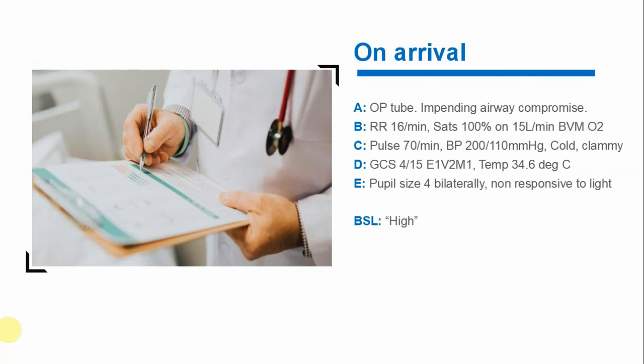On arrival, this was a very critically unwell patient with a low GCS. There was an oropharyngeal tube in place; she was found to be hypertensive with a normal heart rate, cold and clammy, with a high blood sugar. The initial numbers were quite concerning, but within a few minutes her numbers changed even further. Our main concern at that moment was to stabilize her and transfer her to the nearest intensive care unit.